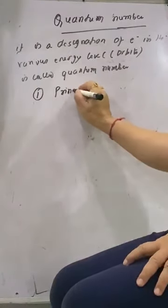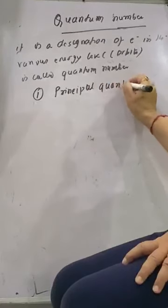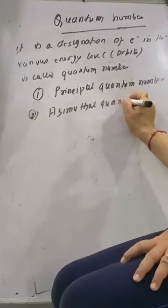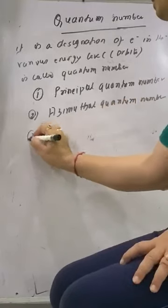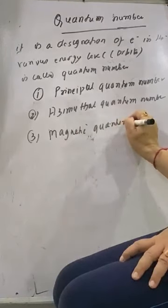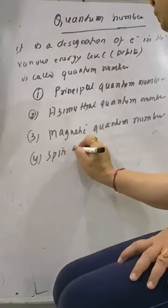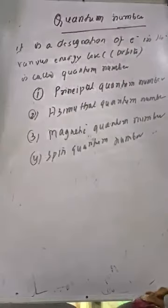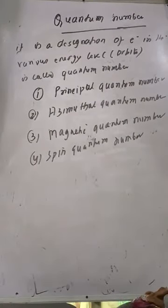Quantum numbers are divided into four parts over here. The principal quantum number. Number two, Azimuthal quantum number. Number three, Magnetic quantum number. And spin quantum number. So we have differentiated the quantum numbers into four parts. Principal quantum number, Azimuthal quantum number, Magnetic quantum number, and spin quantum number. So this is what we have to present from the next class onwards. So next class becomes very important for you. Thank you.